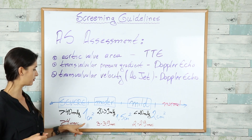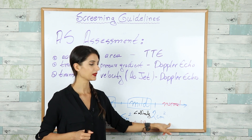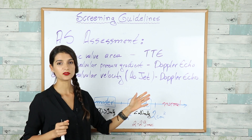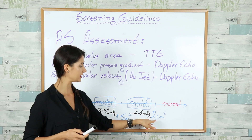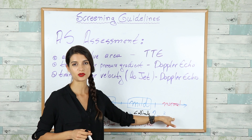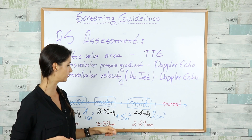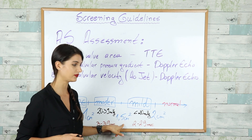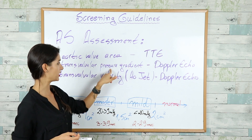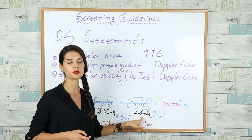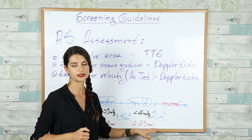Imagine a scale from 0 to 2 cm squared. Normally the aortic valve area is 3 to 4 cm squared, so everything above 2 cm squared is normal. If we have a stenotic valve with a valve area between 1.5 and 2 cm squared, then we have mild stenosis. The pressure gradient will be less than 20 mmHg and the aortic jet will be 2 to 2.9 m/s.